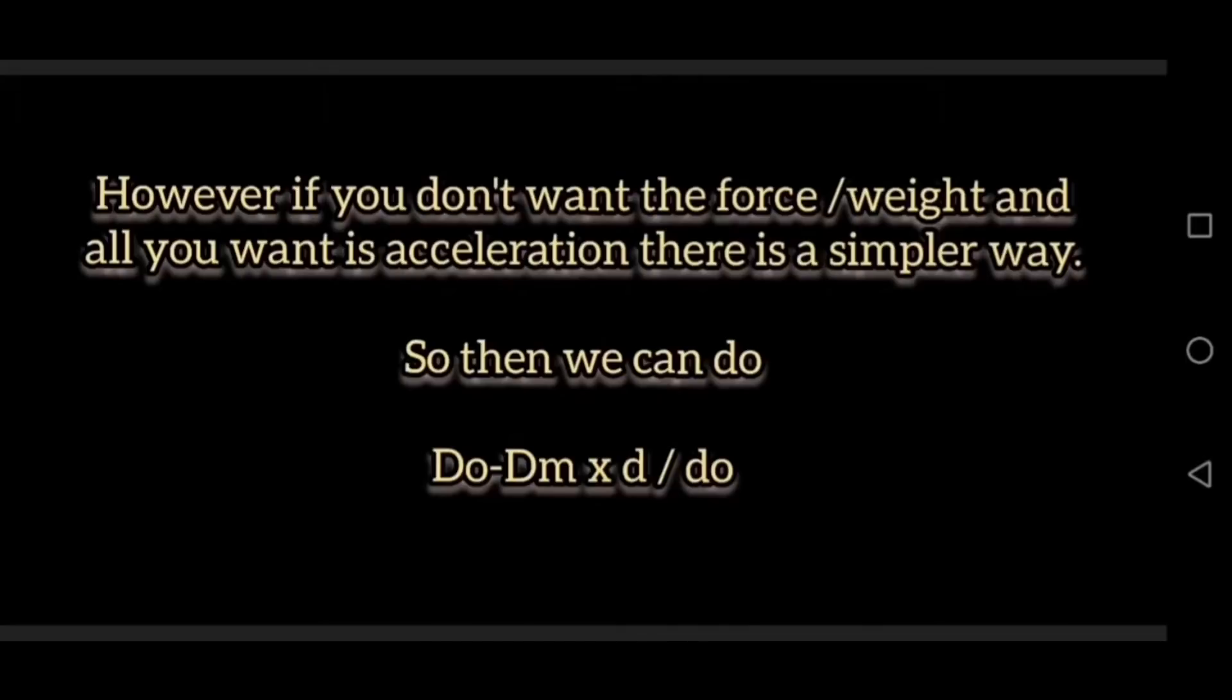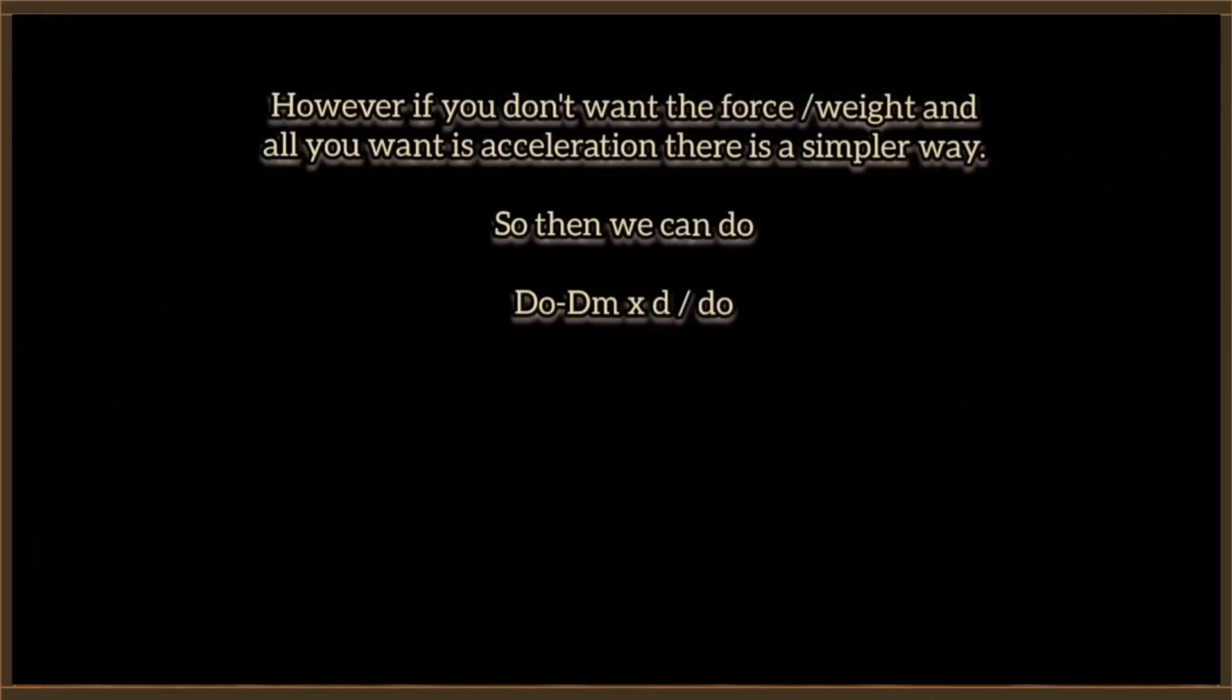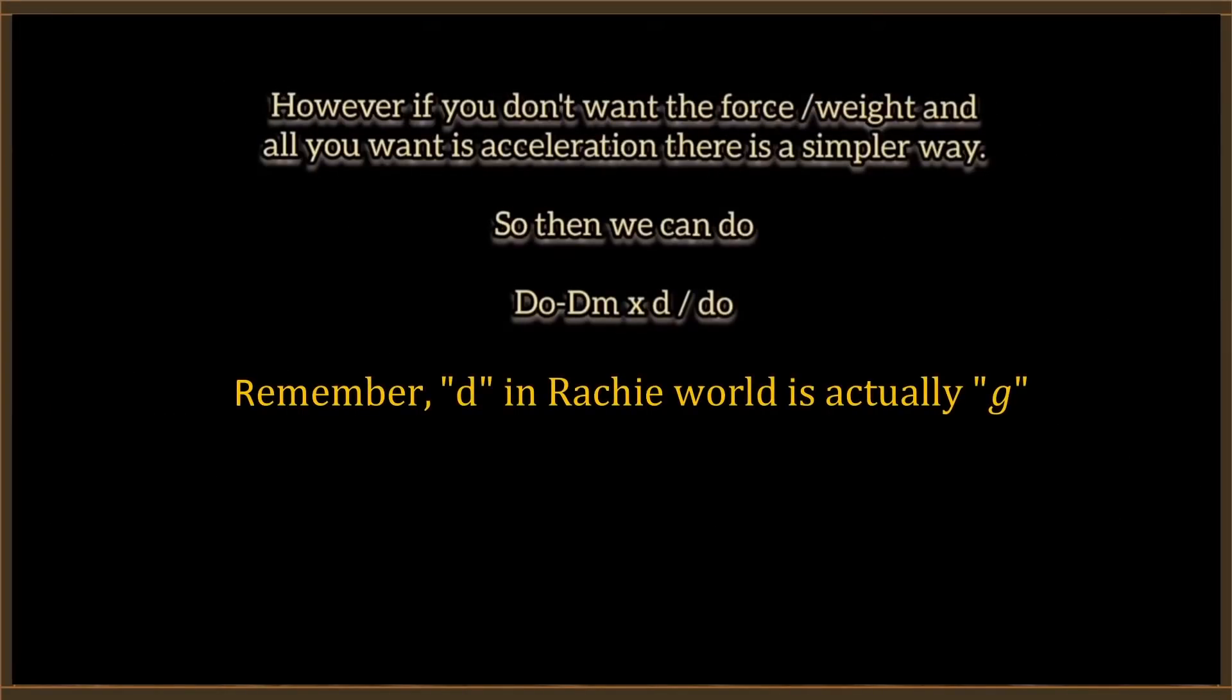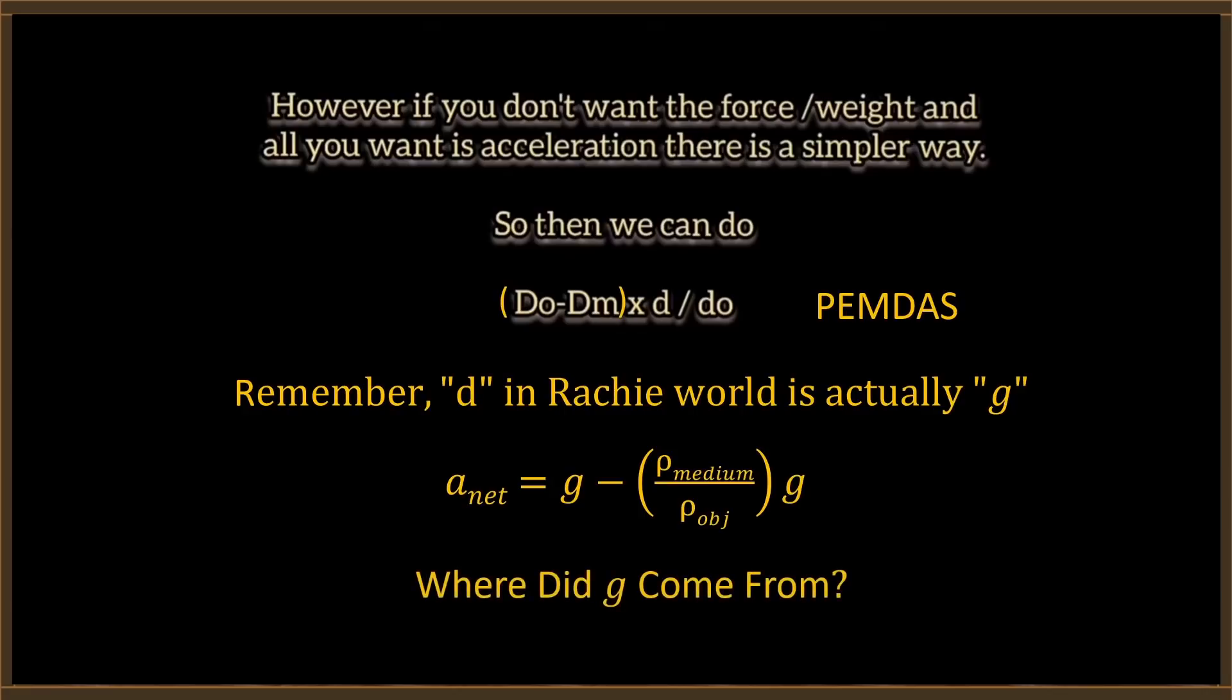However, if you don't want the force, you don't want the weight and all you want is the acceleration, there is a simpler way. Then we can do the density of the object minus density of the medium times the disequilibrium rate in a vacuum divided by density of the object. And that will again give you the acceleration rate. Well, let's remember that D in Richie's world is actually what we call little g. Richie, you've got a small problem with your formula. Remember this thing we call PEMDAS. You evaluate stuff in the parentheses first, then exponents, then multiply, then divide, then add, and then subtract. You needed to put some parentheses right here. Otherwise, you're going to get a really wrong answer. But with the parentheses in there, we end up with that expression. You get a net acceleration. No problem with that. The real question, Richie, is where did little d come from? Where did g come from? That's the question. You need to explain that.